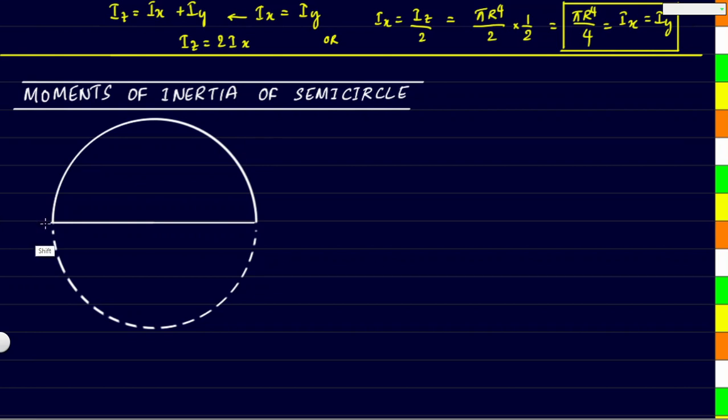In this video, we will find the moments of inertia for a semicircular area that is shown over here. We can see the lower part of the circle has been removed from the main circle and we are just left with the semicircle at the top.